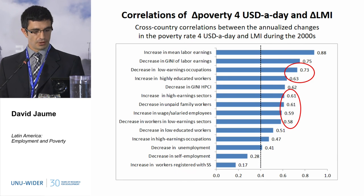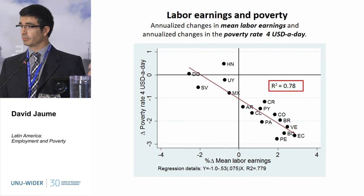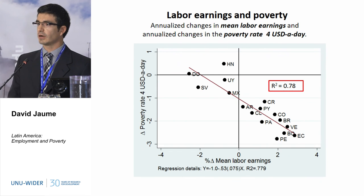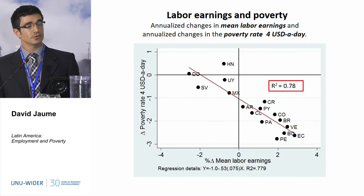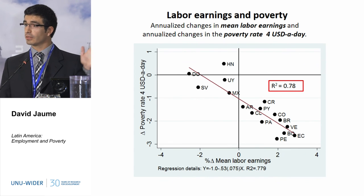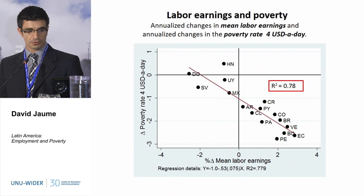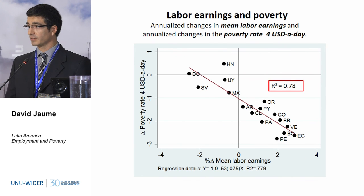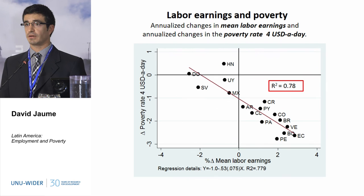Let me show you how this looks in the data. For example, this is the relationship between reductions in poverty and increases in mean labour earnings, and this relationship is very tight — the R-squared is almost 0.8, and all the points lie very close to the line. This is not obvious because, as Gary was explaining, in the case of the United States mean labour earnings has increased but poverty has not been reduced. So this relationship is not automatic — it's very interesting that we are finding this in Latin America.